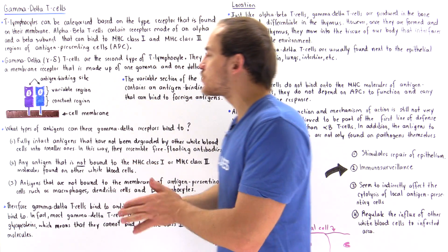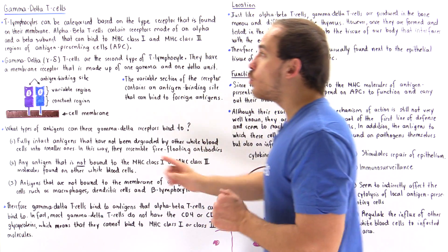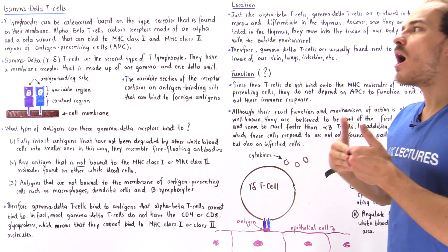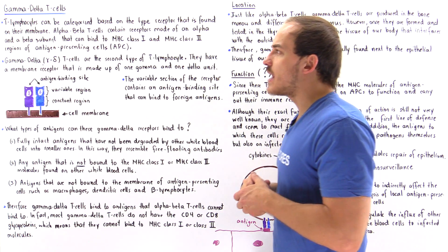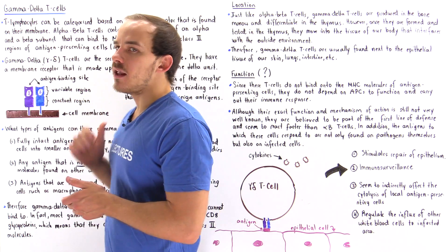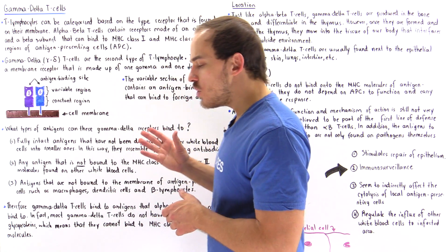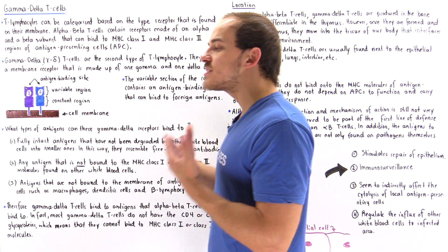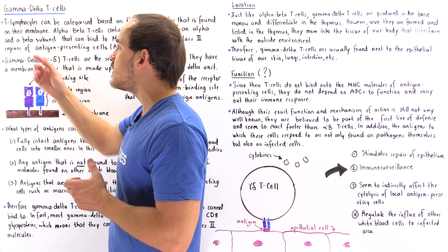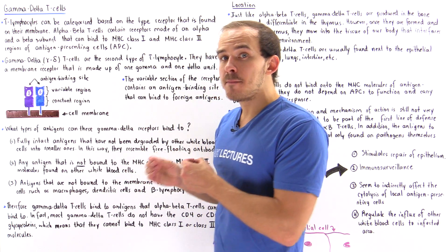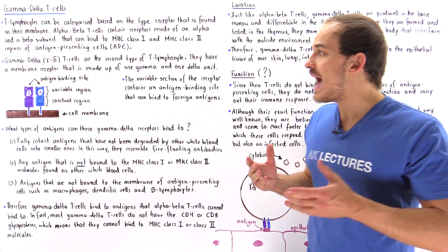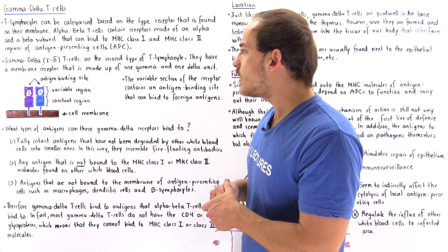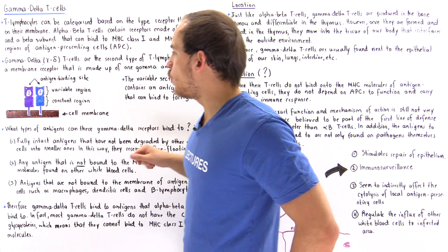Alpha-beta T cells can only interact with these antigen-presenting cells. The other category of T cells is known as the gamma-delta T cells, which contain T cell receptors that are slightly different. Instead of having an alpha and a beta polypeptide subunit, they have a gamma and a delta polypeptide subunit, as shown in the following diagram.